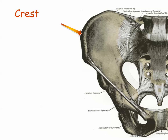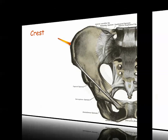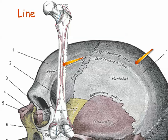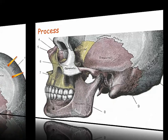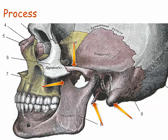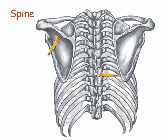A crest is a moderately raised ridge, generally a site for muscle attachment; the term crest literally means tuft or comb. A line is similar to a crest but not raised as much — it is often rather faint, as in these lines seen along the back of the femur and along the side of the skull. A process is the general name for any bone projection or significantly raised area. A sharp, pointed process may be called a spine or spinous process; a spine can be similar to a crest but raised more, and is used for muscle attachment. Spine literally means thorn.